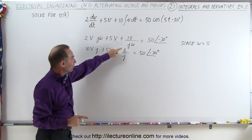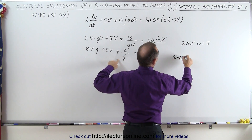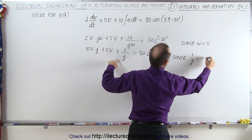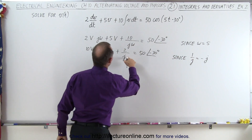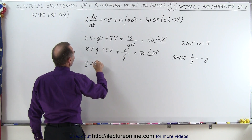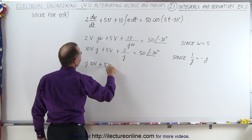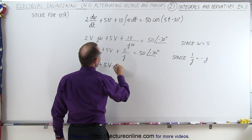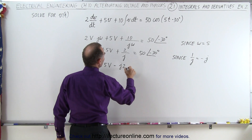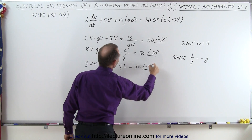We realize we have a 1 over j in here, and since 1 over j is equal to negative j, we can replace this by negative j. So we have j times 10V plus 5V minus j times 2 is equal to 50 at a phase angle of minus 30 degrees.